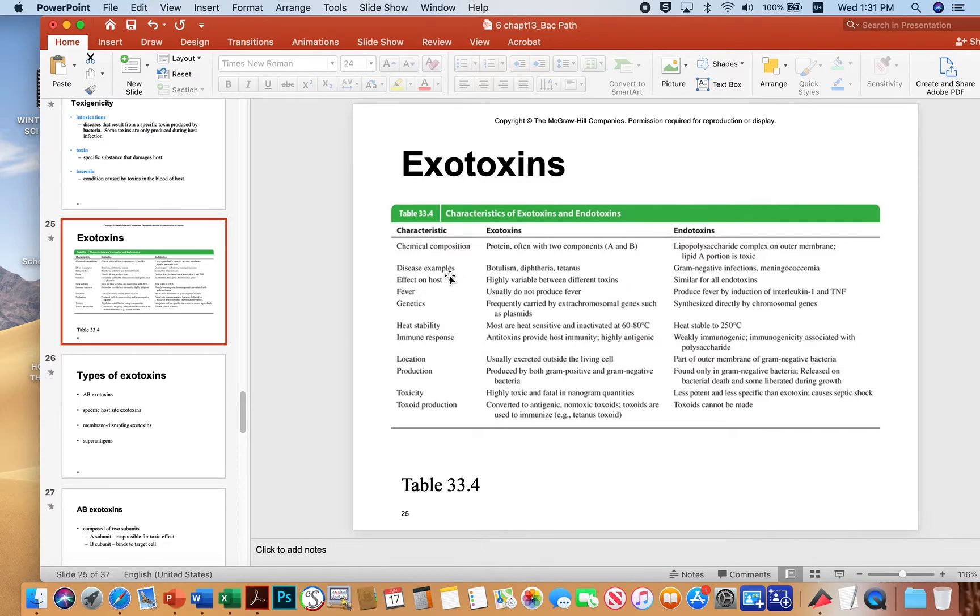Some examples of exotoxin-producing bacteria are botulism, diphtheria, and tetanus, whereas endotoxins, any gram-negative infection can result in endotoxin production.